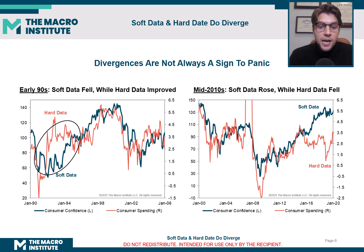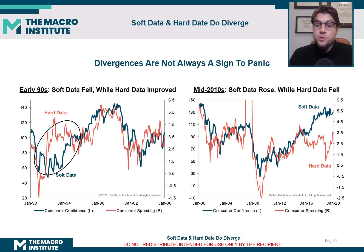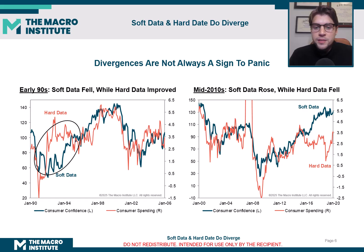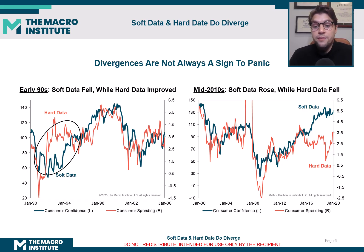We can see it's diverged in two ways in the past. In the early 90s, the soft data consumer confidence fell, but consumers were still spending money — eventually the series synced up again. On the right, we can see the opposite occurred: consumer confidence rose ahead of COVID while the hard data consumer spending series fell.